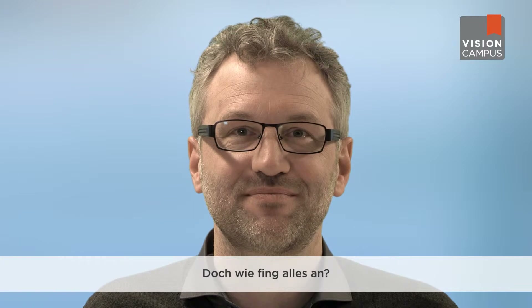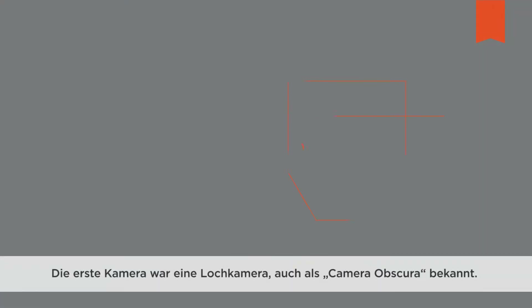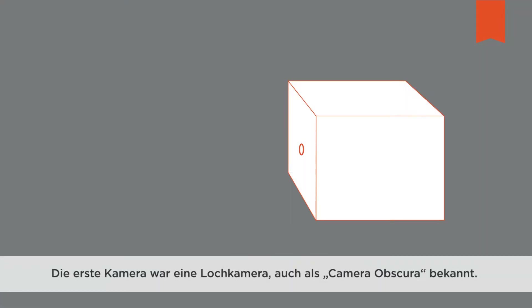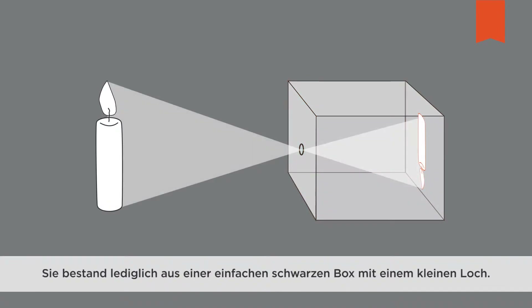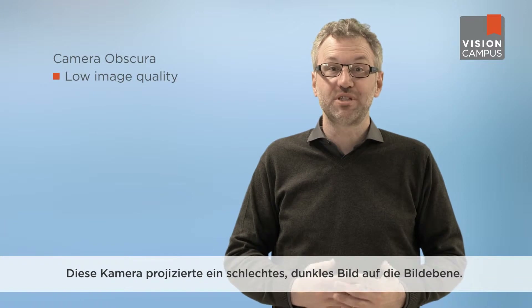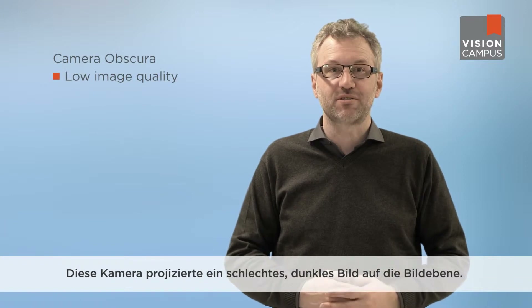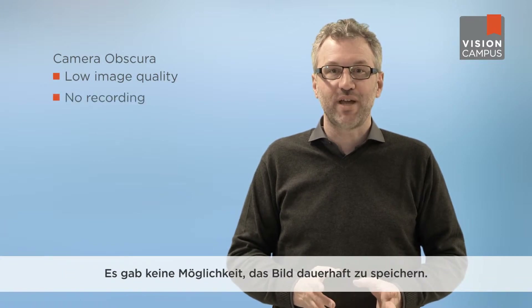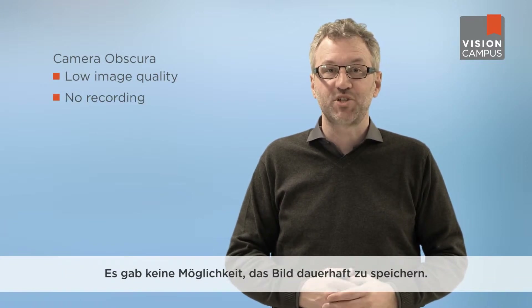So how did it all begin? The first camera was a pinhole camera known as the camera obscura. It involved nothing more than a black box with a small hole in it — no lens, no film, nothing. The camera projected a poor, dark image onto the screen.